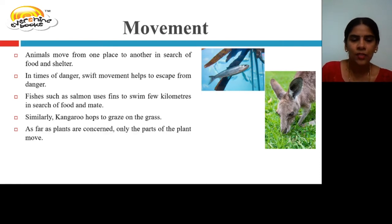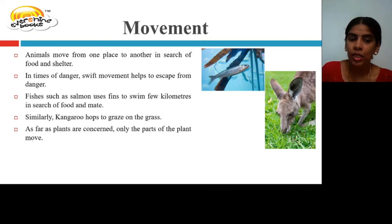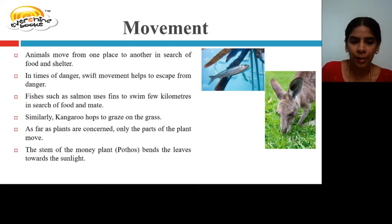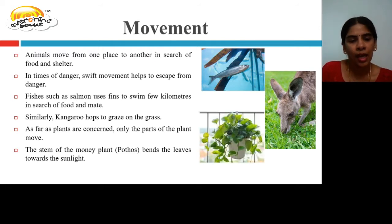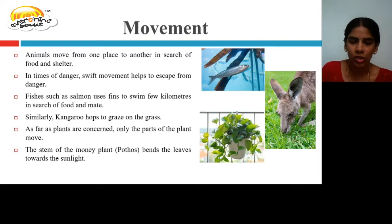As far as plants are concerned, only the parts of the plant will move. The stem of the money plant, known as pothos, bends its leaves towards the sunlight. That is the movement of the plant.